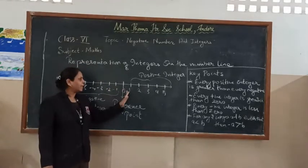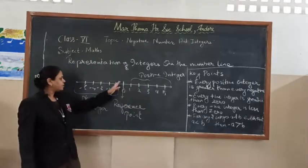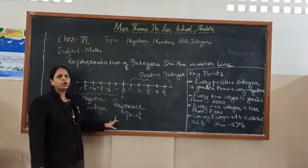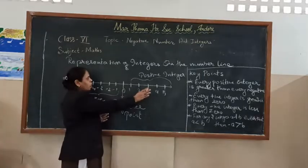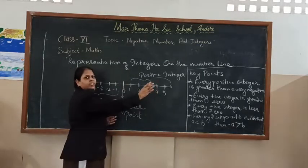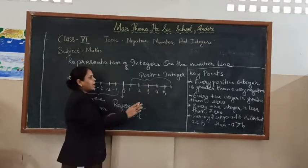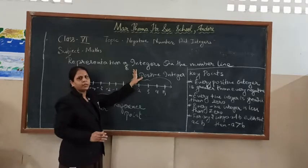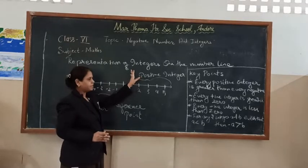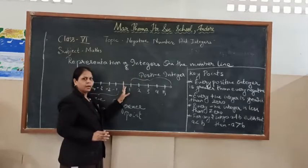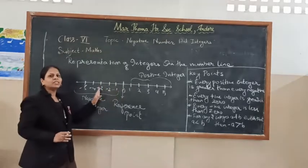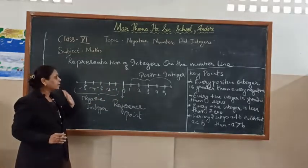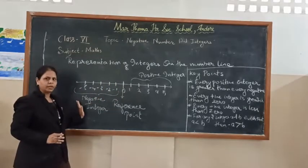Here I have made the number line. Zero is the reference point of the number line. On the right-hand side of zero, all the integers occurring are known as positive integers. Since zero is the reference point, on the left-hand side, whatever integers are coming are the negative integers.